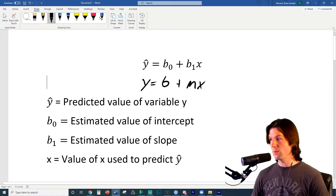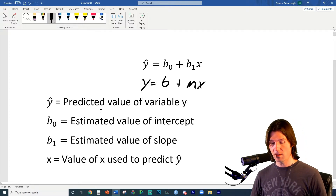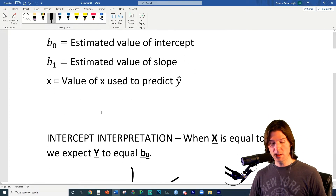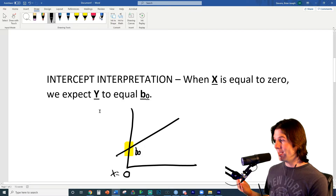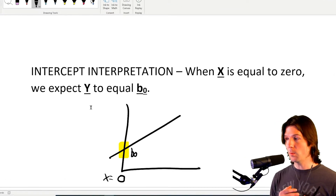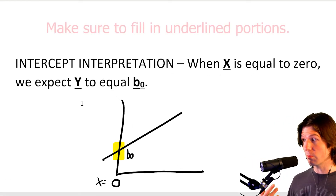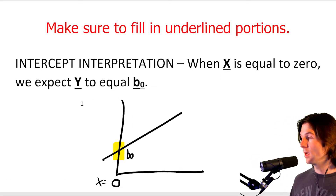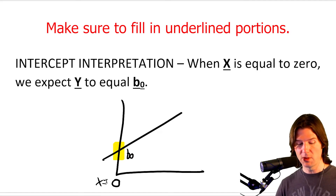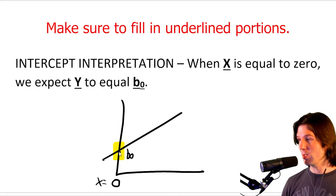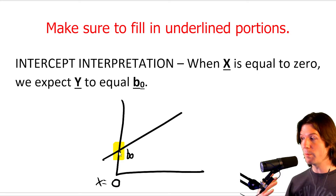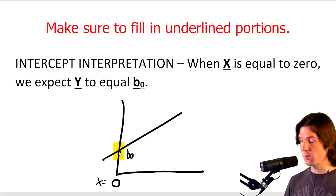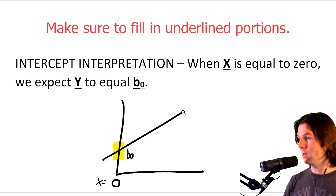Let's think about B0, which is the intercept. When we look at the intercept, what we're talking about is: when X is equal to zero, we expect Y to equal B0. When X equals zero, we expect or predict Y to be equal to B0. So this is the prediction for the intercept from the line.